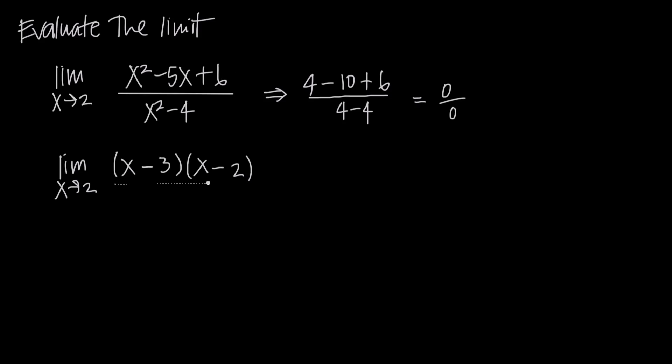And then what about our denominator? In the denominator, we have x squared minus 4. Can we factor that? Of course we can because it's the difference of squares, so we know that we can factor this as x plus 2 times x minus 2.